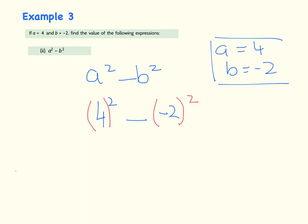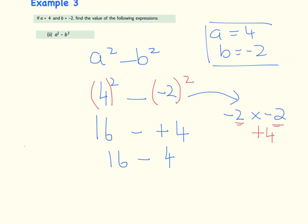4 squared is 16. Minus, minus 2 squared, you can do this on your calculator, but if I just bring you over here to the side. Minus 2 squared means minus 2 multiplied by minus 2. And a minus multiplied by a minus gives me a plus. And 2 multiplied by 2 gives me 4. So I will have 16 minus plus 4. But again, you cannot have a minus and a plus together. A minus and a plus will always give you a minus. So it becomes 16 minus 4. And your answer to this question here is 12.